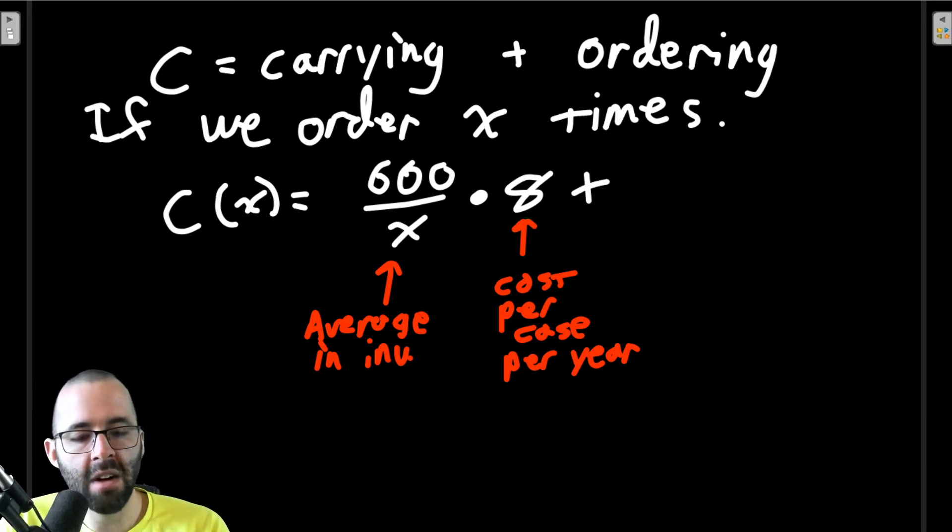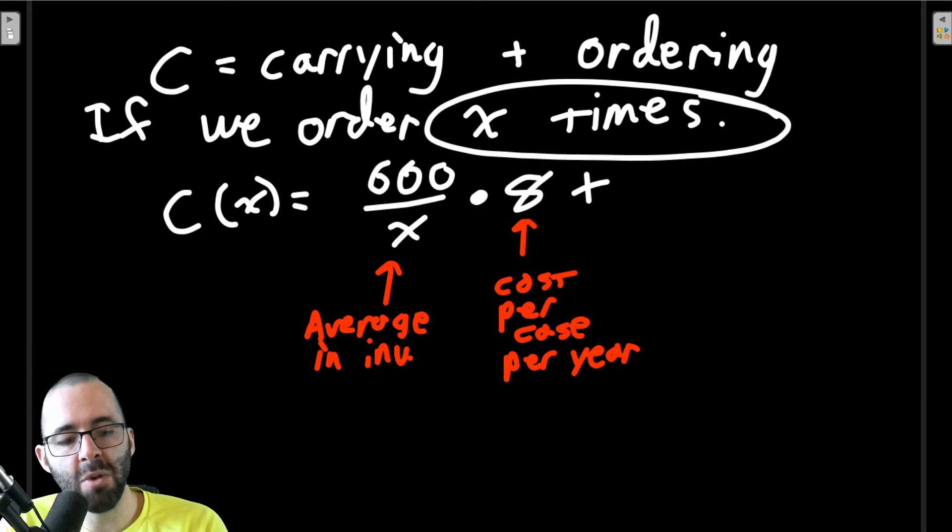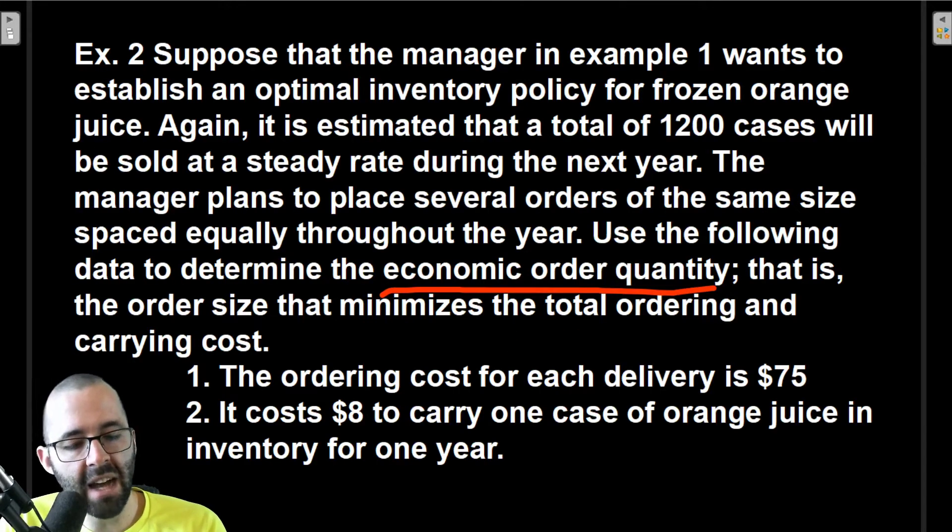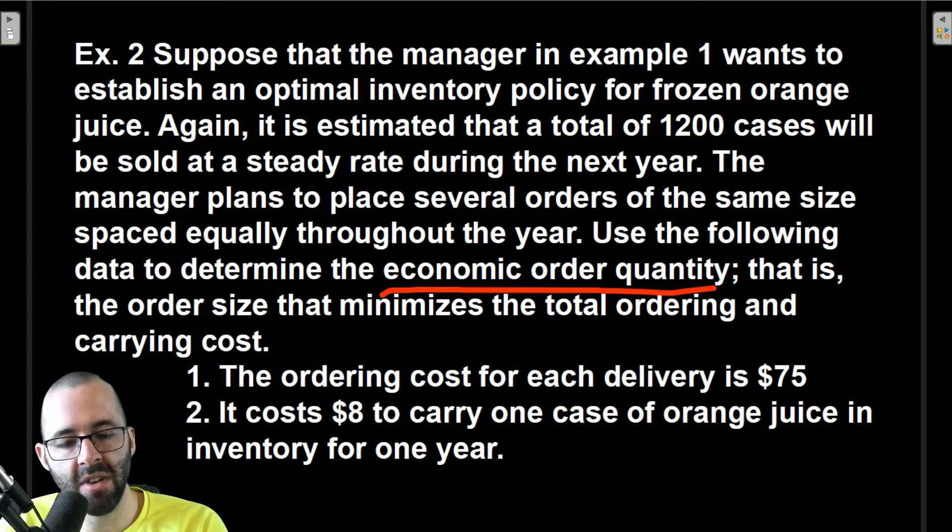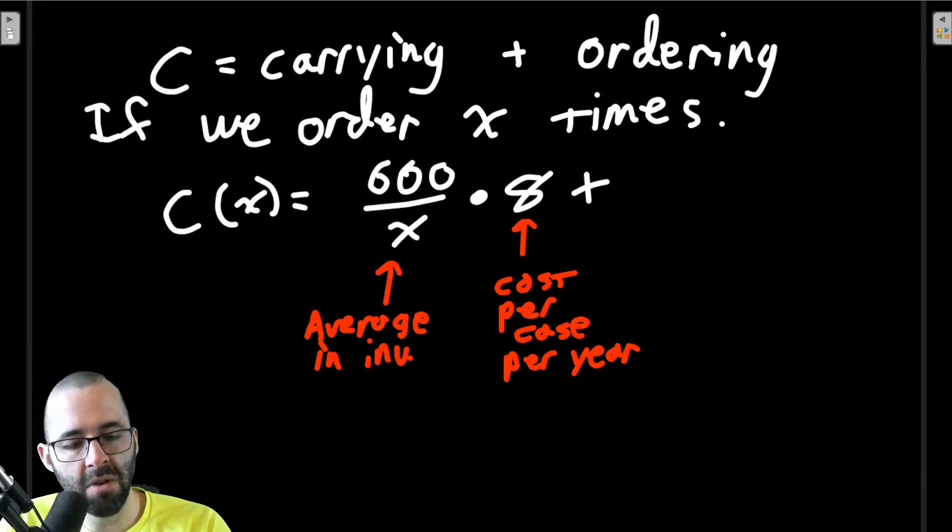Then we have to add the ordering cost as well. If we're making x orders, and each one is going to cost $75, well then the ordering cost is just $75 times x.